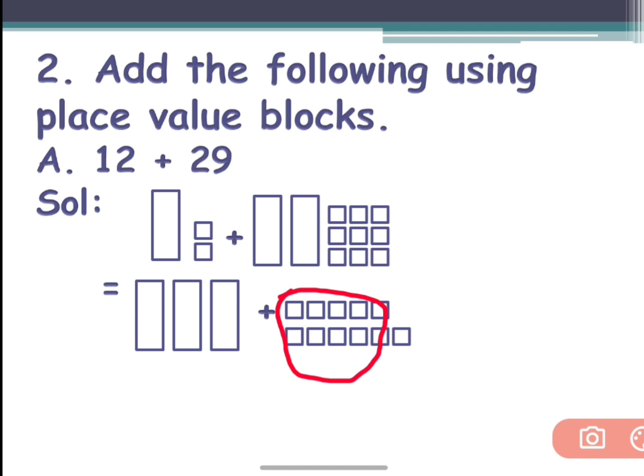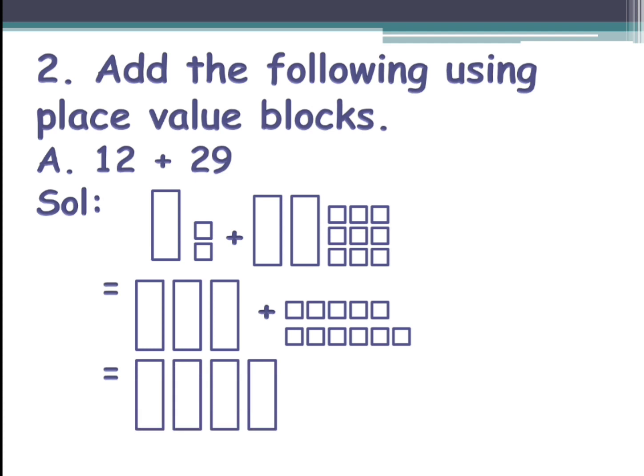We can make it as 1 ten, that is one rectangle. I'll make one rectangle in tens place. Before they were three here, one two three. Here I have drawn one two three, and from these 10 I made another one. Now how many are left out in ones? Only one small square is left out.